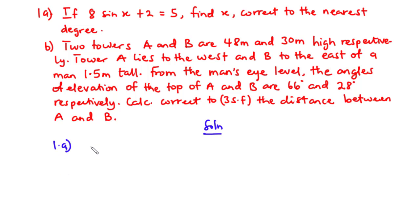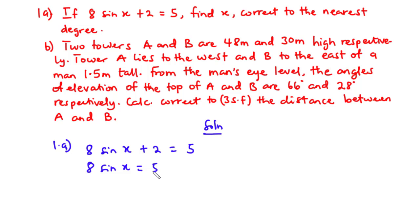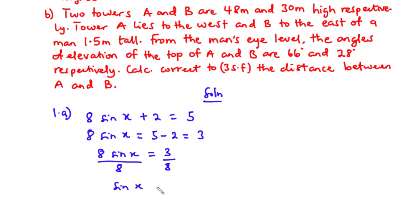We are given: 8 sine x plus 2 is equal to 5. Here, 8 sine x is one term, 2 is another term, and 5 is another term. To find the value of x, we transpose 2 to the right hand side: 8 sine x equals 5 minus 2, which equals 3. So 8 sine x equals 3. Dividing through by 8, sine x equals 3 over 8, which is 0.375.